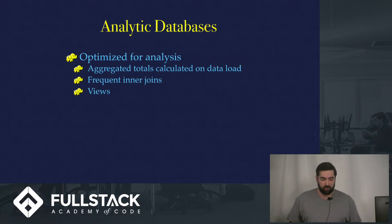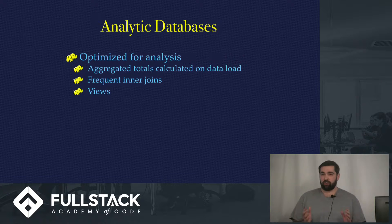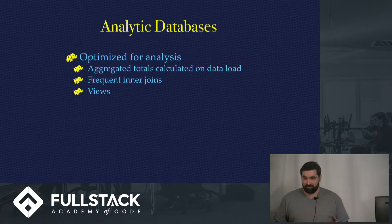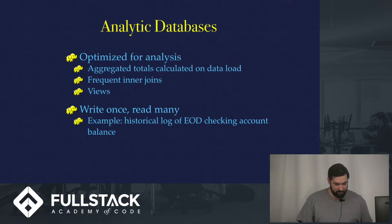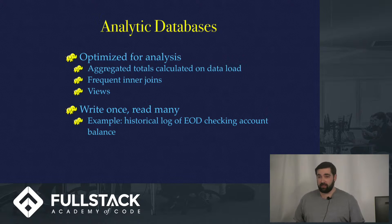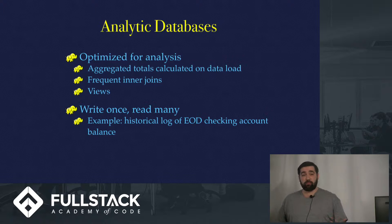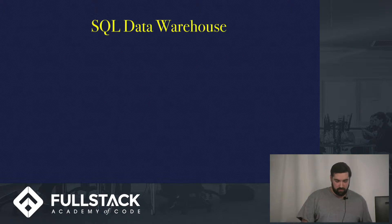Compare that with an analytical database, which is optimized for analysis. Aggregated totals are calculated on data load, and you frequently use inner joins. For frequently made requests you'd use a view — either unmaterialized or materialized — to preload that join. It's a write-once, read-many model because this is historical data. For example, an end-of-day checking account balance would be stored as a historical record that you'd never change, used as a reference for analysis over the past months.